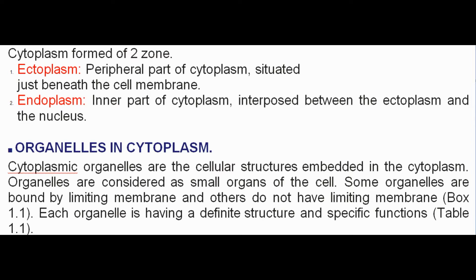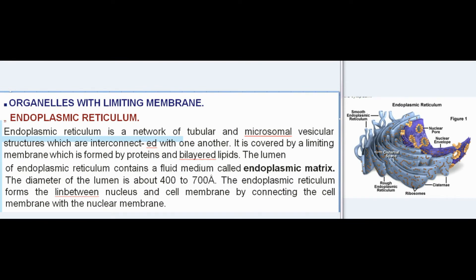Cytoplasmic organelles are cellular structures embedded in the cytoplasm, considered as small organs of the cell. Some organelles are bound by a limiting membrane and others are not. Each organelle has a definite structure and specific functions. Endoplasmic reticulum is a network of tubular and microsomal vesicular structures interconnected with one another, covered by a limiting membrane formed by proteins and bilayer lipids. The lumen contains a fluid called endoplasmic matrix with a diameter of about 400 to 700 Å.